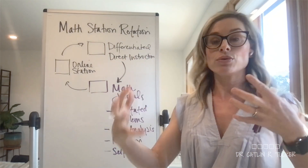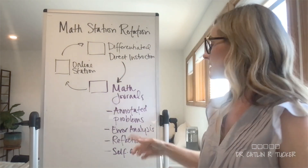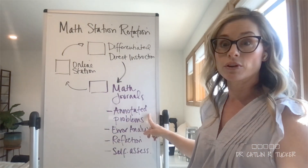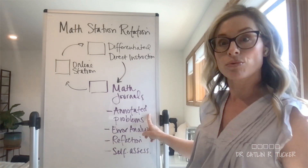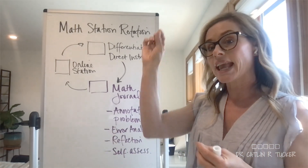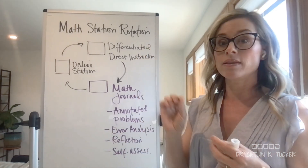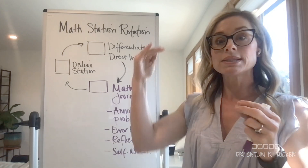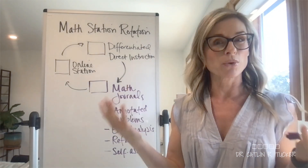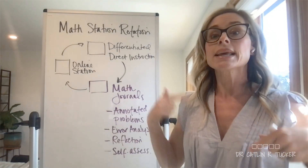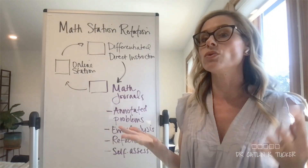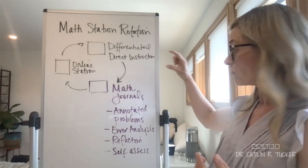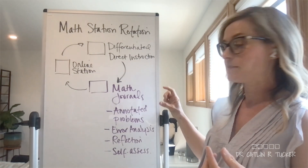If they are working through some problem sets, maybe we ask them to select a handful of problems — maybe three out of a problem set — and annotate them in their journal. How did you solve this problem? What steps did you move through and why? Can you surface and articulate your mathematical thinking in writing next to this problem?